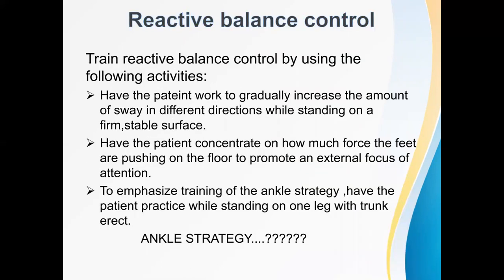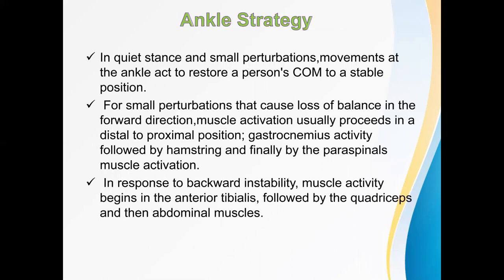Then we talk of reactive balance control. The patient can work to gradually increase the amount of sway in different directions while standing on a firm stable surface. To emphasize training of the ankle strategy, have the patient practice while standing on one leg with trunk erect. The ankle strategy is used in quiet stance for small perturbations — movements at the ankle joint restore the center of mass to a stable position. For small perturbations causing forward loss of balance, muscle activation proceeds distal to proximal: gastrocnemius, then hamstring, then paraspinal muscles. For backward instability, it begins at the anterior tibialis, then quadriceps, then abdominals.